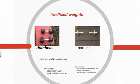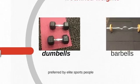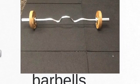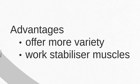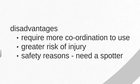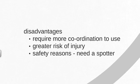The next type is free and fixed weights, most commonly dumbbells and barbells. The individual selects the weight and performs exercises standing or on a bench, with a wide variety of exercises available. Free weights are preferred by elite athletes and coaches for this variety. Advantages include more exercise variety and engagement of stabiliser and core muscles. Disadvantages include requiring more coordination and technique, making them difficult for beginners. They carry a greater risk of injury and for safety generally require a partner or spotter.